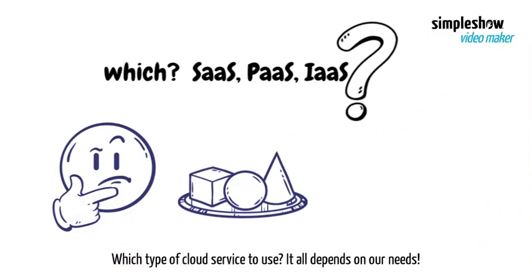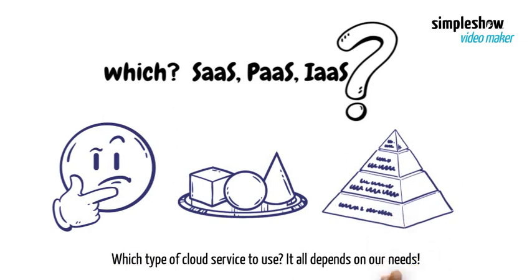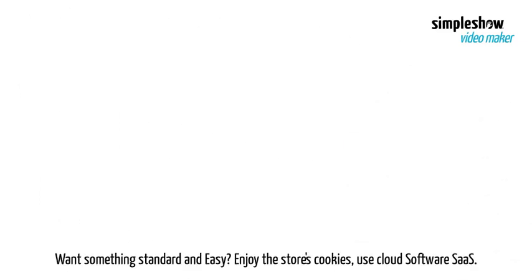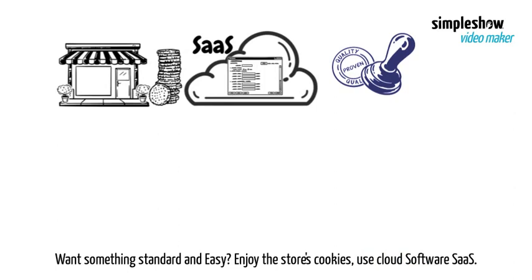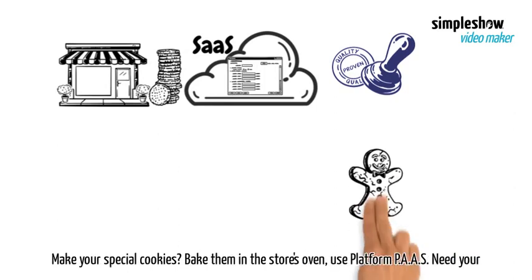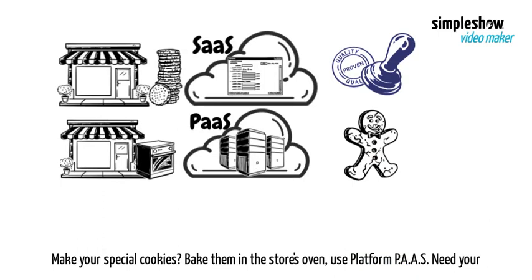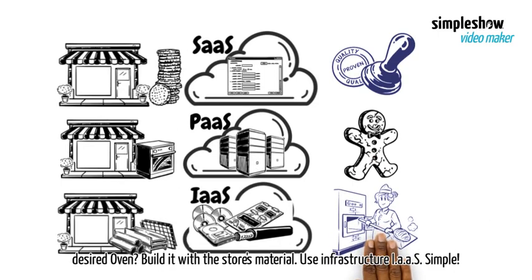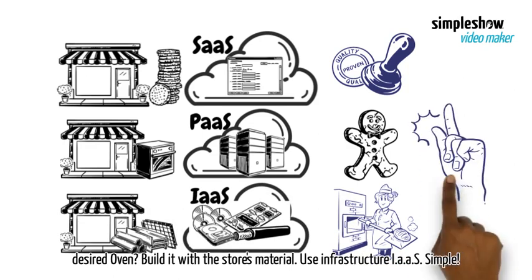Which type of cloud service do you use? It all depends on our needs. Want something standard and easy? Enjoy the store's cookies — use cloud software, SaaS. Make your special cookies? Bake them in the store's oven — use platform, PaaS. Need your desired oven? Build it with the store's material — use infrastructure, IaaS. Simple.